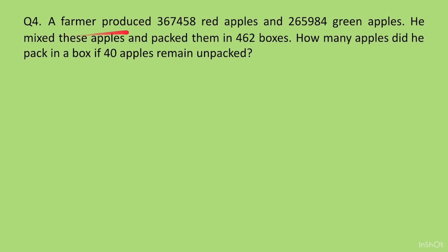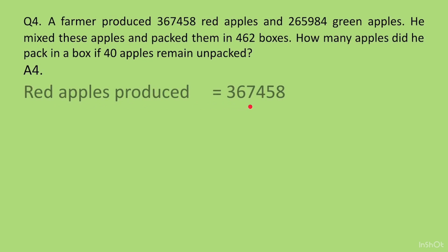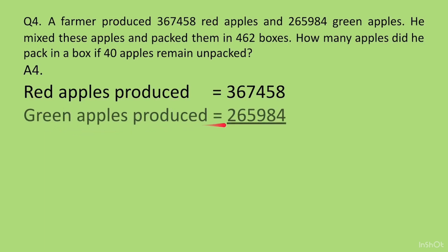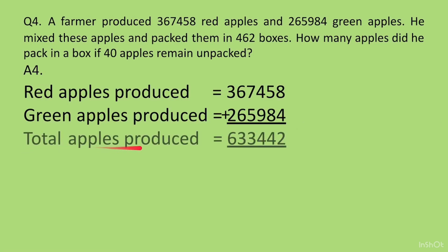Question 4. A farmer produces 367458 red apples and 265984 green apples. He mixes these apples and packs them in 462 boxes. How many apples did he pack in a box if 40 apples remained unpacked? We write: red apples produced is 367458; green apples produced is 265984. Total apples produced — we add these two numbers and get 633442.